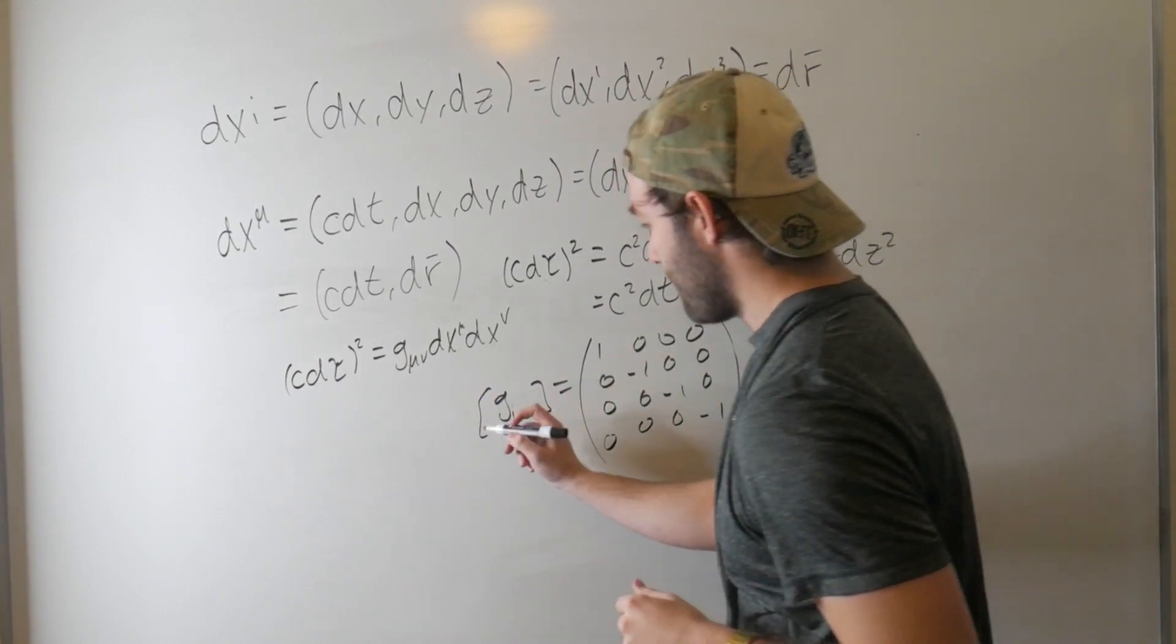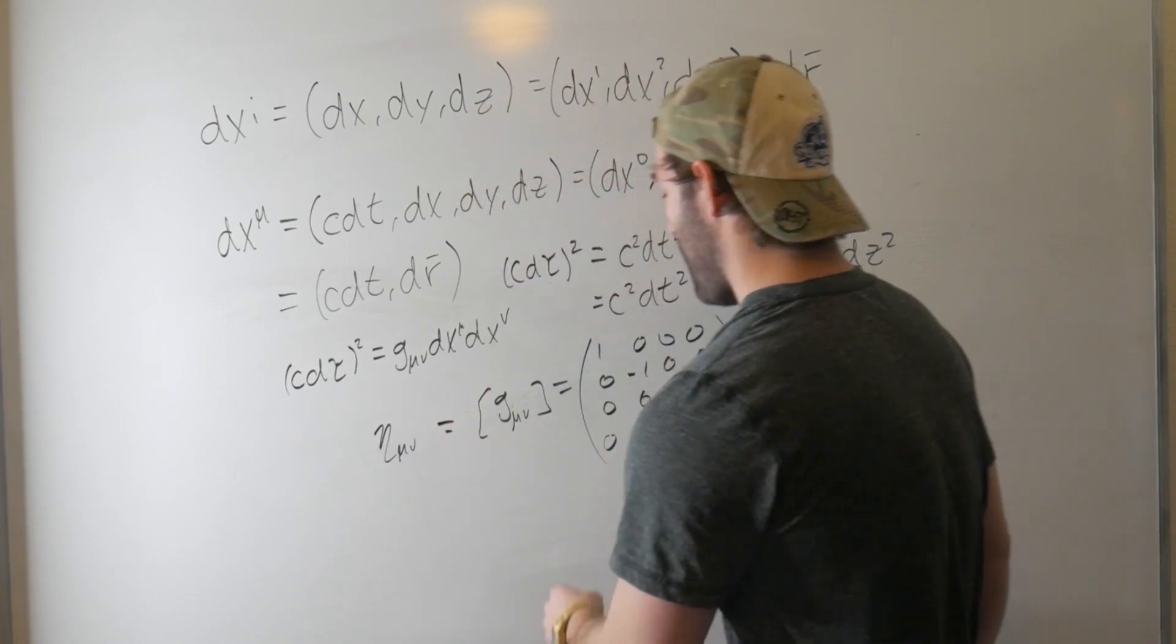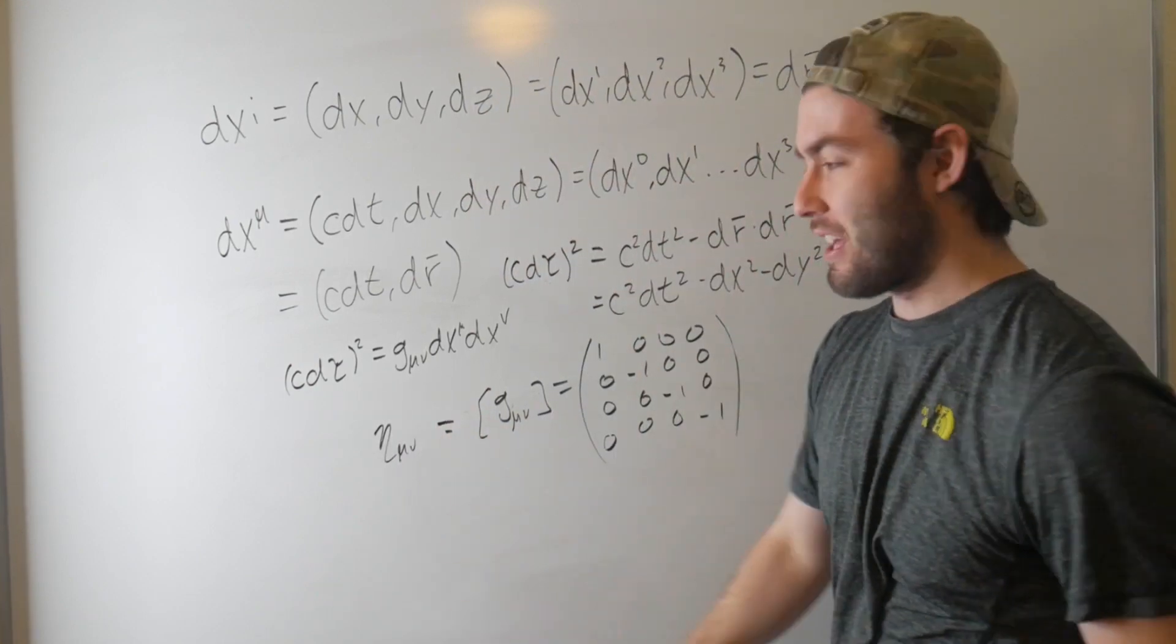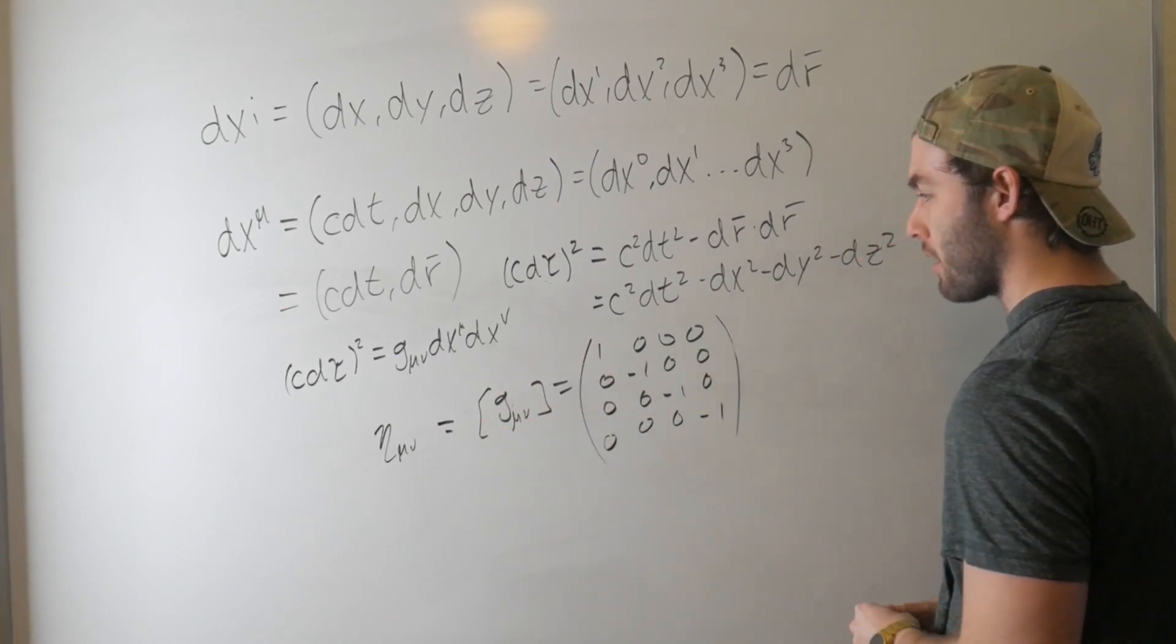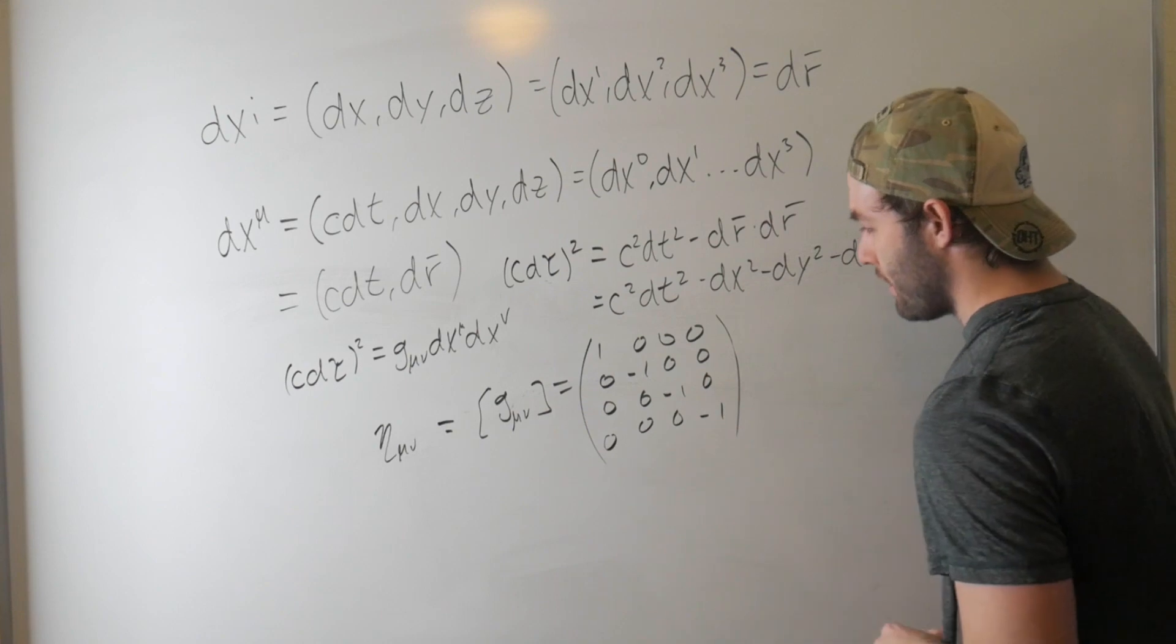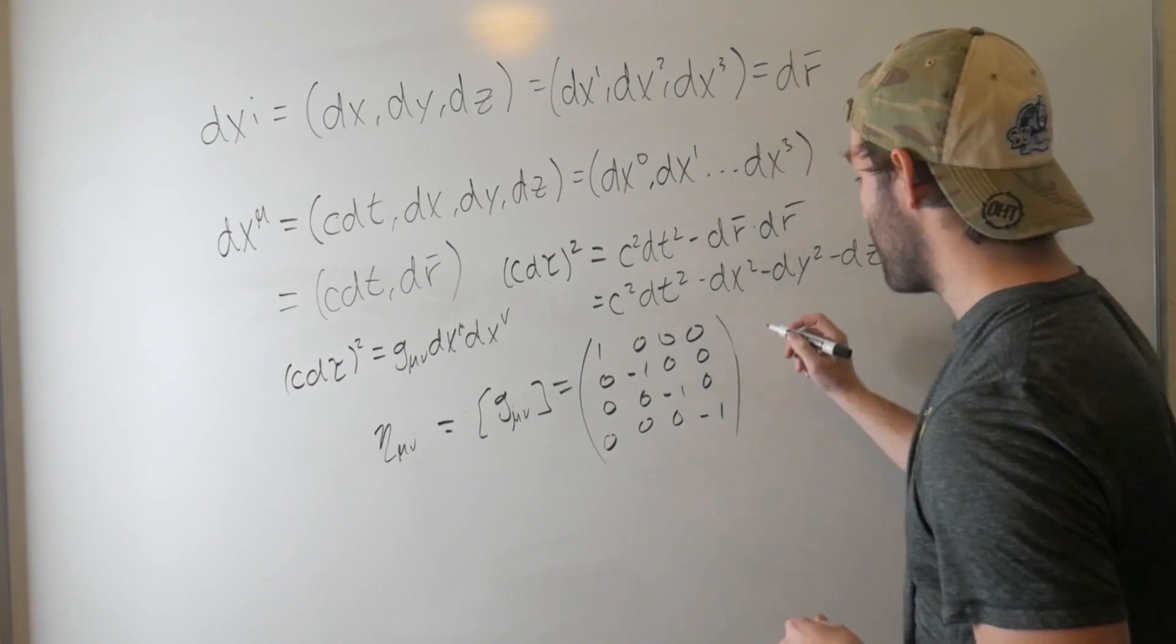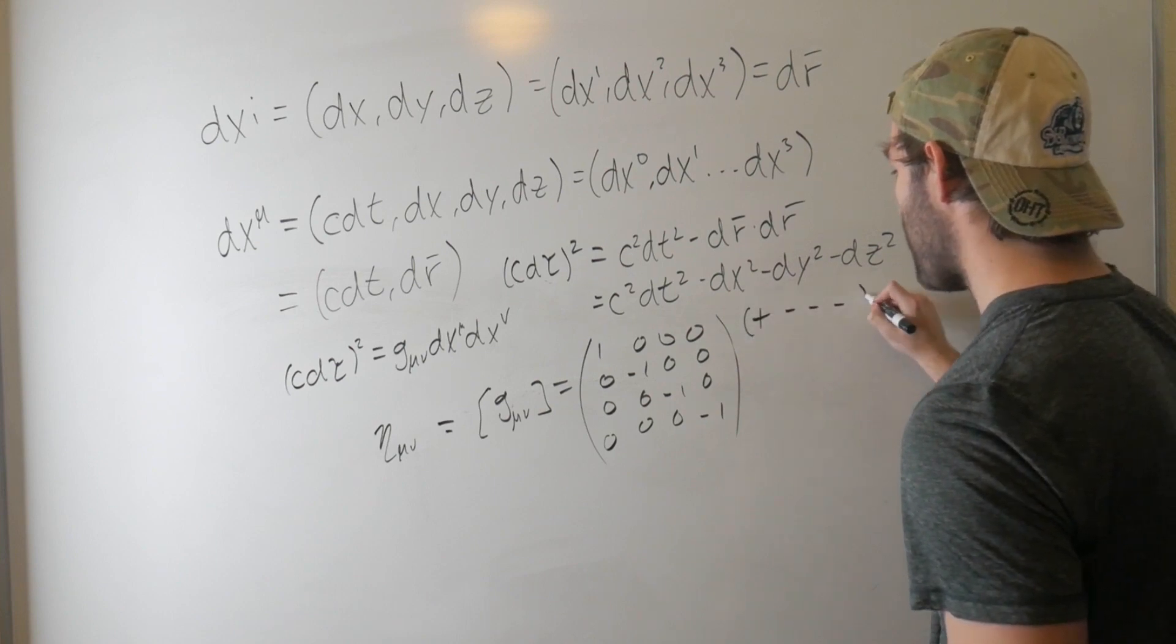This Minkowski metric is sometimes denoted with an eta instead, η_μν, just to show we're in flat spacetime, we're not doing anything funky with the metric, but the fact that we have a positive sign in the time part and negative signs in the spatial part, that's a convention. It's a metric signature. Sometimes you'll see it denoted as a plus, minus, minus, minus.